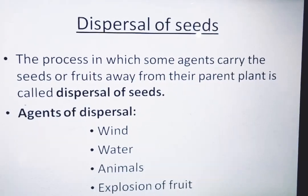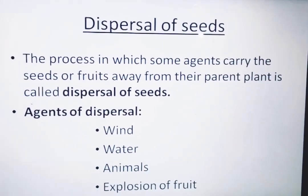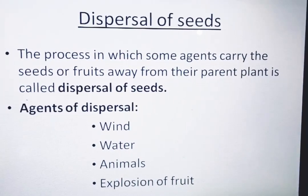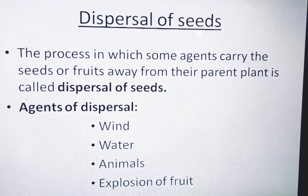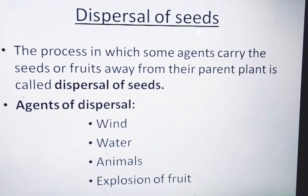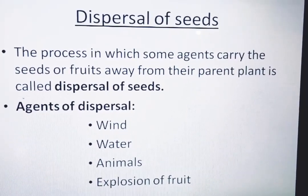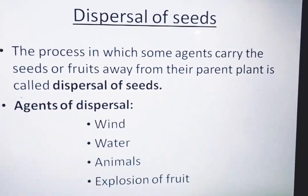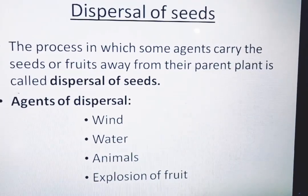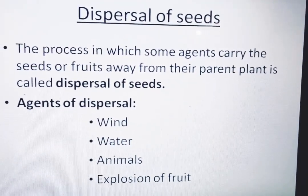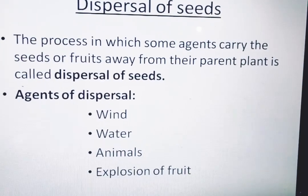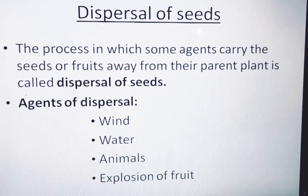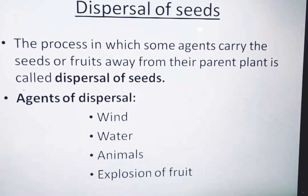Why is there a need for dispersal of seeds? Because plants are fixed to the ground and cannot move from one place to another. If all the baby plants grow near the parent plants, not all would survive — they would not get enough sunlight, food, water, and space to grow. That is why the process in which some agents carry the seeds or fruits away from their parent plant is called dispersal of seeds. The agents are wind, water, animals, and explosion of fruits.